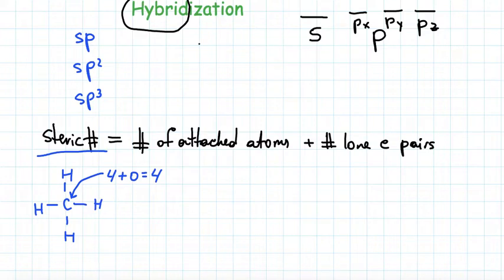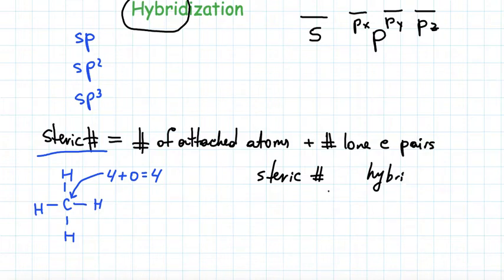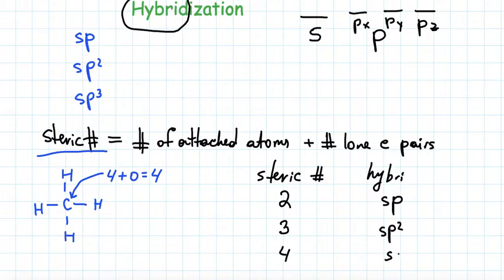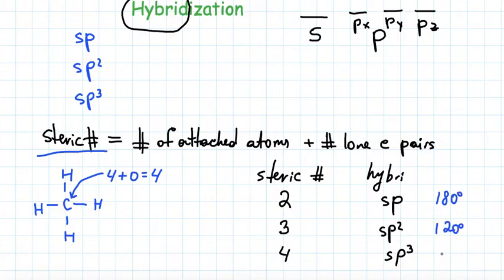Now we will see how the steric number is connected to hybridization. Here is a chart: when steric number is 2, hybridization is sp; when steric number is 3, hybridization is sp2; and when steric number is 4, hybridization is sp3. Your professor might also ask about bond angles — sp has a bond angle of 180 degrees, sp2 is 120 degrees, and sp3 is 109.5 degrees. If you correctly predict the steric number, you will correctly predict the hybridization and the angle.